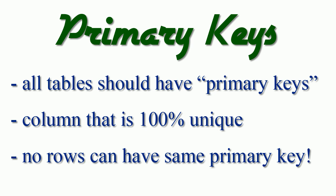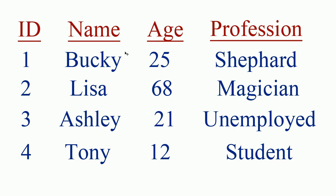Whenever you make a table in a database, you need to have a primary key — that is a column that's guaranteed to be 100% unique. No entries or rows can have the same primary key. A good example in America is our social security number — no one else has our same social security number. So whenever you say 'return the person with a primary key of one,' it's only going to return one result.